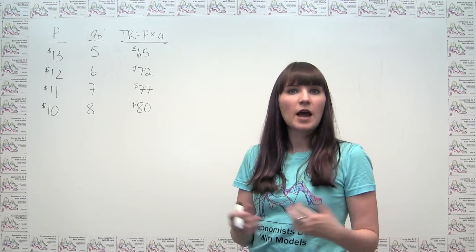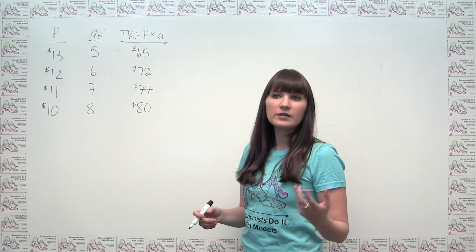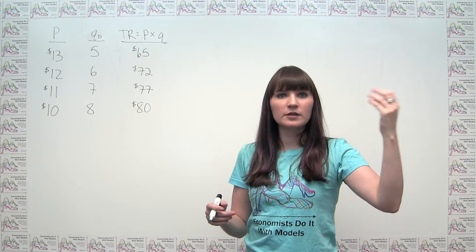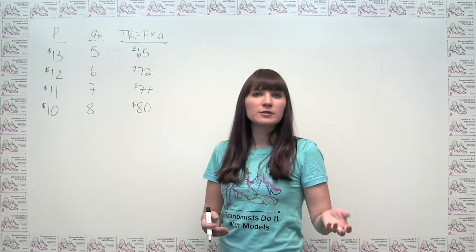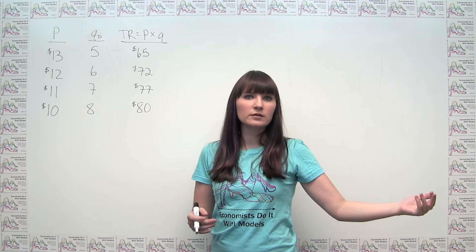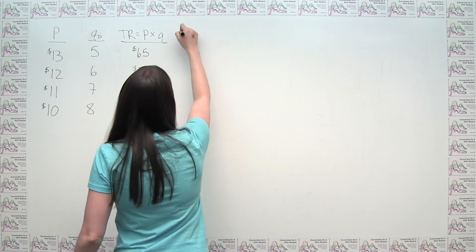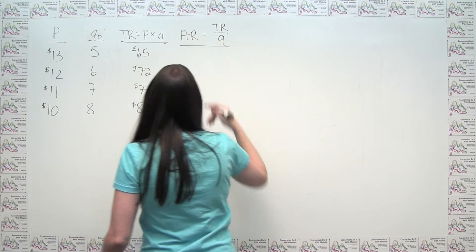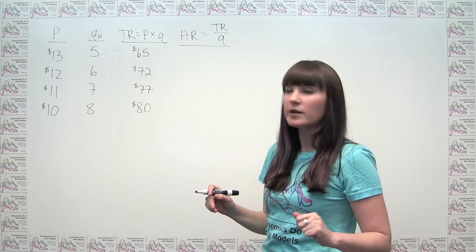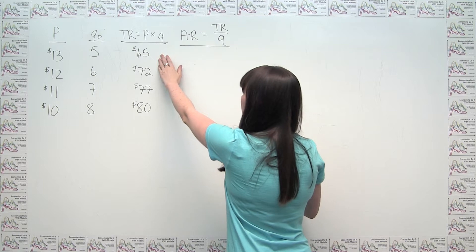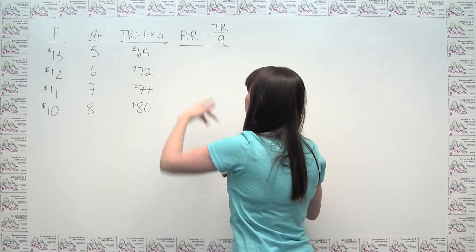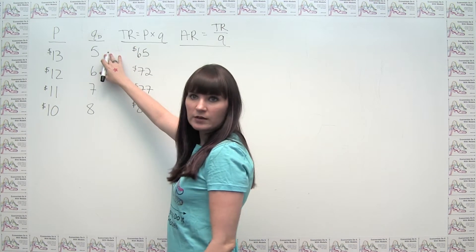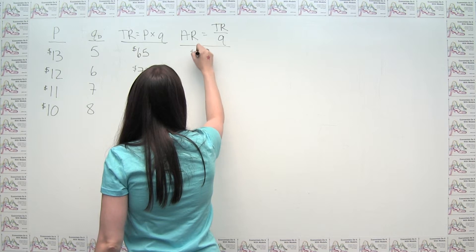We could also calculate average revenue. Average anything is generally the total of that thing divided by quantity. So average revenue is just total revenue divided by quantity. At our first production level and price, average revenue would be total revenue of $65 divided by a quantity of 5, and we get $13.